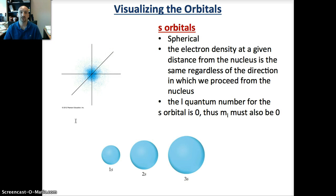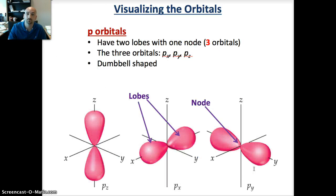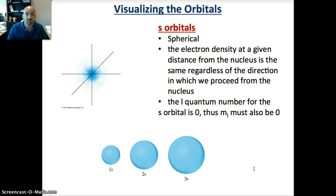The first one we're going to talk about is the S orbital. It's named S because it's spherical. Basically the electron density at a given distance from the nucleus is the same regardless of the direction in which we proceed from the nucleus. It's basically a circle, so no matter which direction you go, the probability of the electrons in that region is pretty much the same. The L quantum number for the S orbital is 0, so S orbitals always have a 0 L quantum number, which means that M sub L must also be 0 because it's from minus L to L. So we only have one value for M sub L.